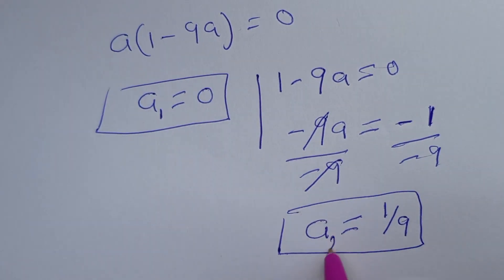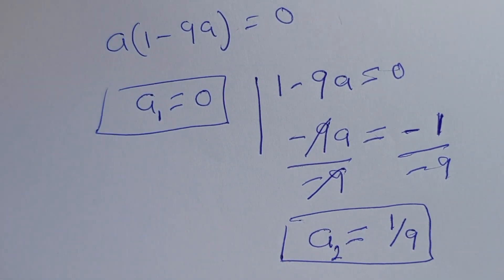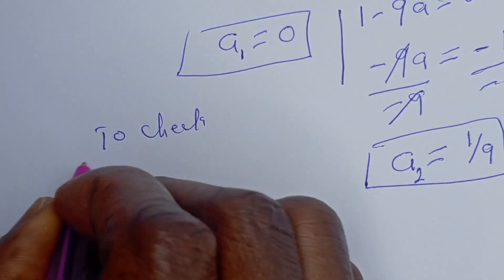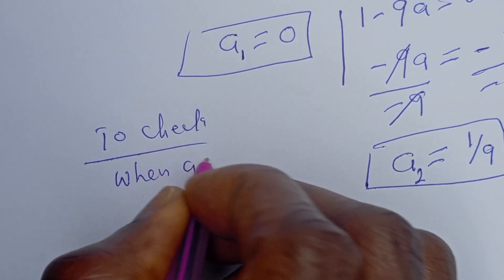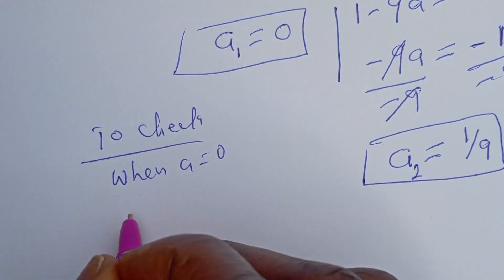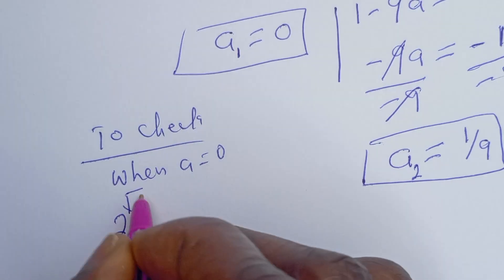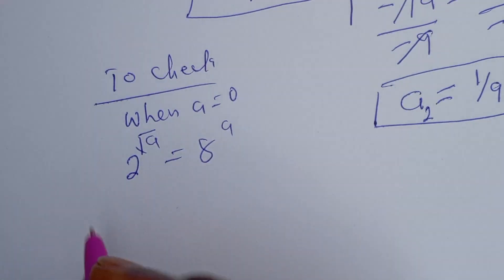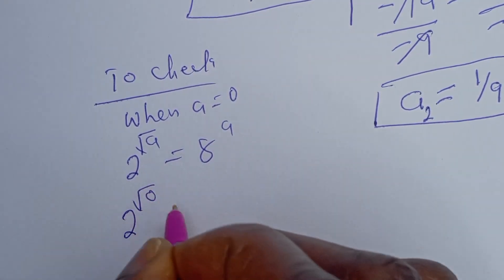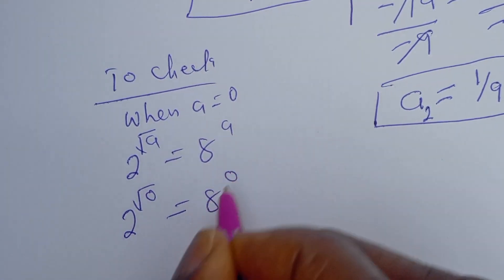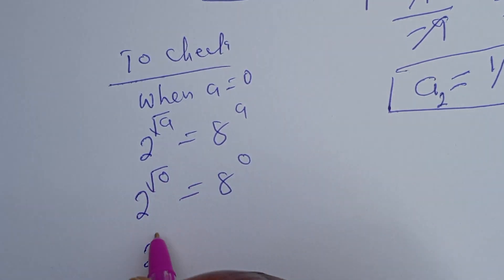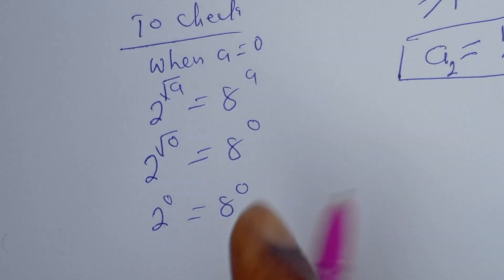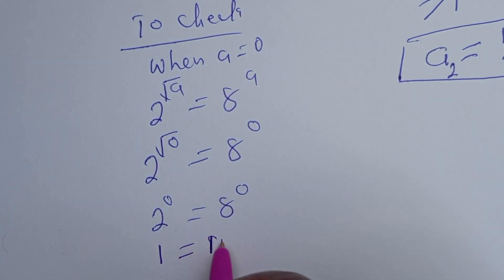We can check to confirm if these two answers are correct. Call this a₂. When a is equal to zero, we have 2 to the power of square root of a equals 8 to the power of a. This gives 2 to the power of square root of 0 equals 8 to the power of zero. Since square root of 0 is 0, we get 2 to the power of 0 equals 8 to the power of 0, which is 1 equals 1. This is true.